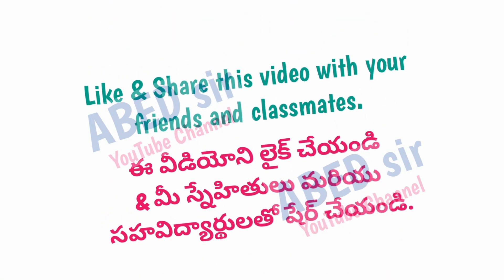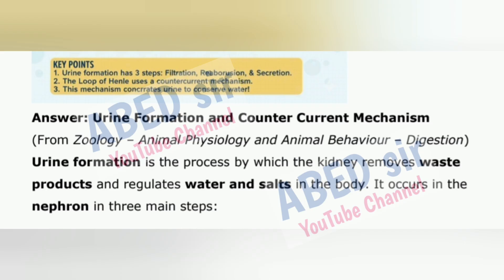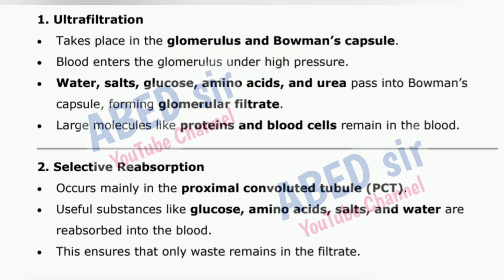Next important long question 4: Give an account of urine formation and add a note on the countercurrent mechanism. Urine formation is the process by which the kidney removes waste products and regulates water and salts in the body. It occurs in the nephron in three main steps. 1. Ultrafiltration — takes place in the glomerulus and Bowman's capsule. Blood enters the glomerulus under high pressure; water, salts, glucose, amino acids, and urea pass into Bowman's capsule, forming glomerular filtrate. Large molecules like proteins and blood cells remain in the blood. 2. Selective reabsorption — occurs mainly in the PCT. Useful substances like glucose, amino acids, salts, and water are reabsorbed into the blood, ensuring that only waste remains in the filtrate.